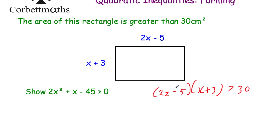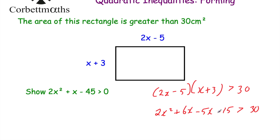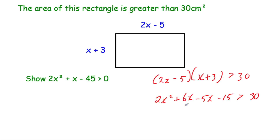Let's expand our brackets. 2x times x is 2x squared, 2x times 3 is plus 6x, minus 5 times x is minus 5x, and minus 5 times 3 is minus 15. So we've expanded our brackets and that's still greater than 30. Now let's simplify: 6x take away 5x gives us 1x.